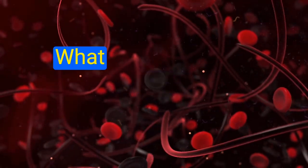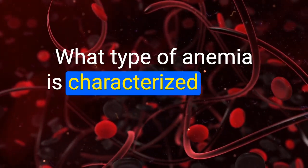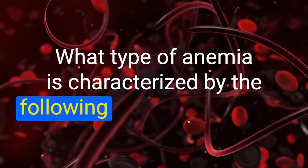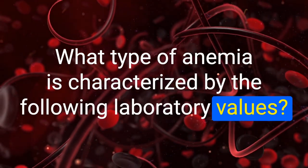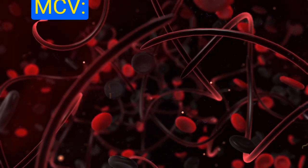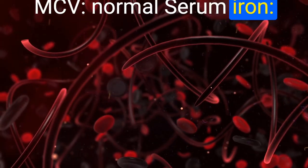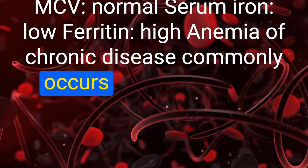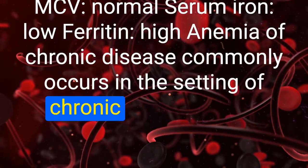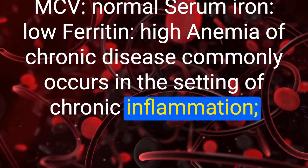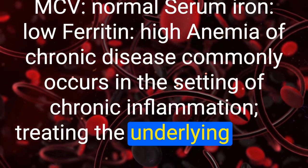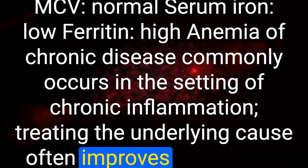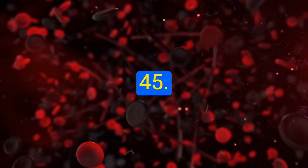What type of anemia is characterized by normal MCV, low serum iron, and high ferritin? Anemia of chronic disease, commonly occurring in the setting of chronic inflammation. Treating the underlying cause often improves the anemia.